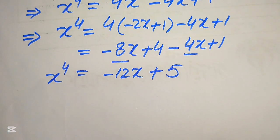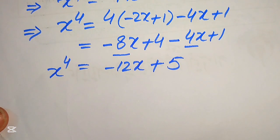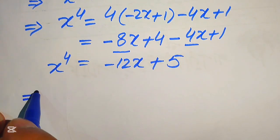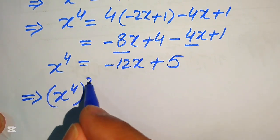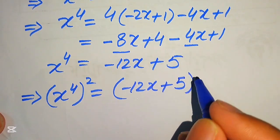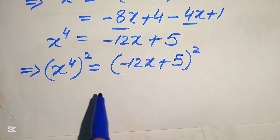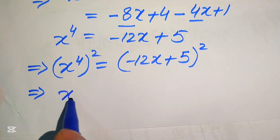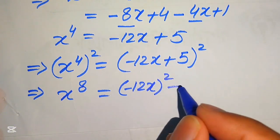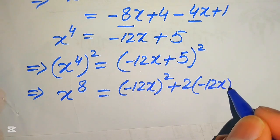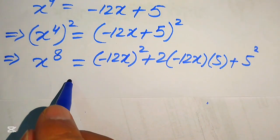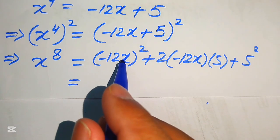To find x to the power of 8, we square both sides again. So x to the power of 4 whole squared gives x to the power of 8, and the right-hand side becomes minus 12x plus 5 whole squared. Applying the algebraic formula: minus 12x whole square plus 2 times of minus 12x into 5 plus 5 squared. Further simplification: 12 squared equals 144.